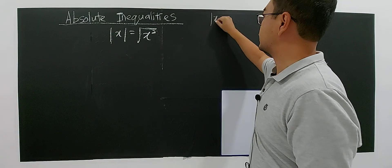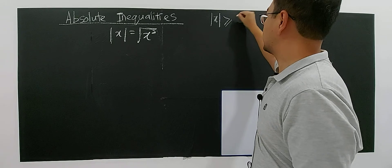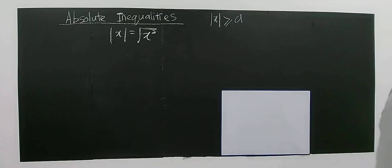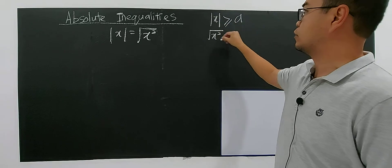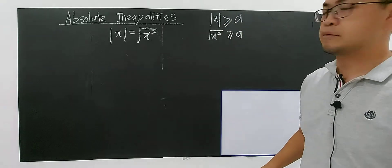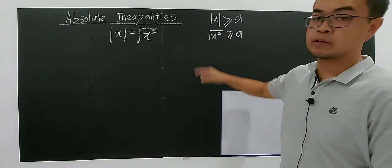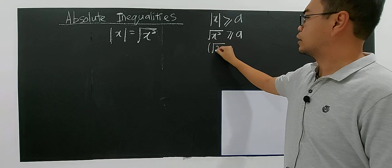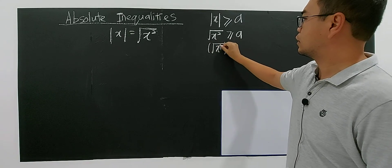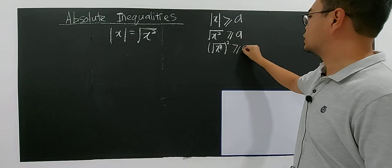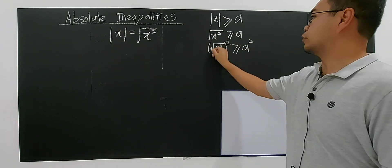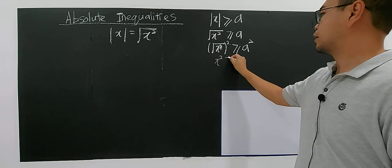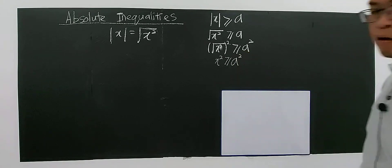For example, if I have modulus x greater than or equal to a, I use this concept where I rewrite modulus x as the square root of x squared, giving square root of x squared greater than or equal to a. Since we have a square root here, I can square both sides, which gives x squared greater than or equal to a squared.